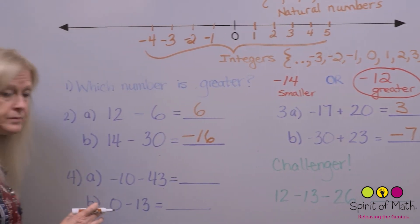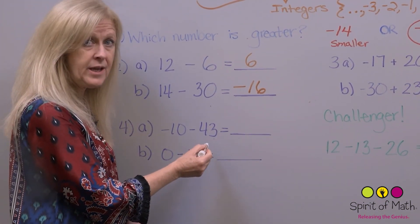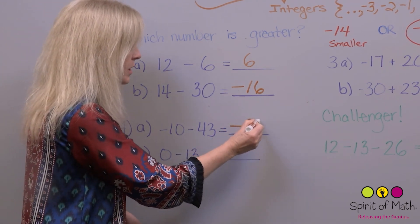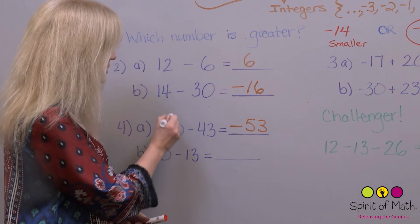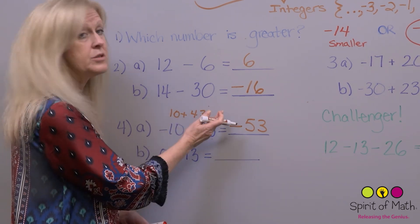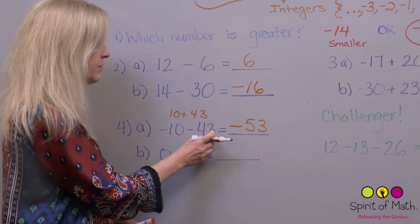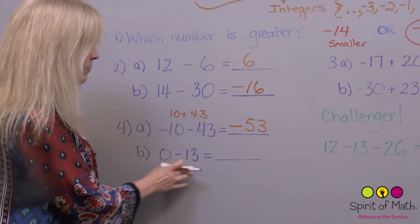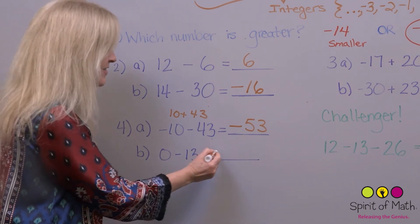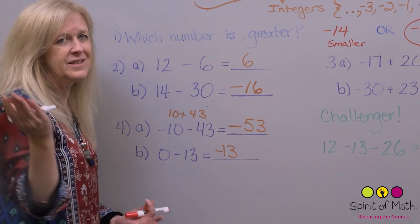Now for the next one: they're both negative — 10 negatives plus another 43 negatives. You know it's going to be negative, and 10 plus 43 makes 53 negatives total. Notice this is similar to 10 plus 43 equals 53, but because both are negative, the answer is negative 53. Finally, zero minus 13: you've got 13 negatives and nothing else, so the answer is negative 13. Zero minus 13 is negative 13.